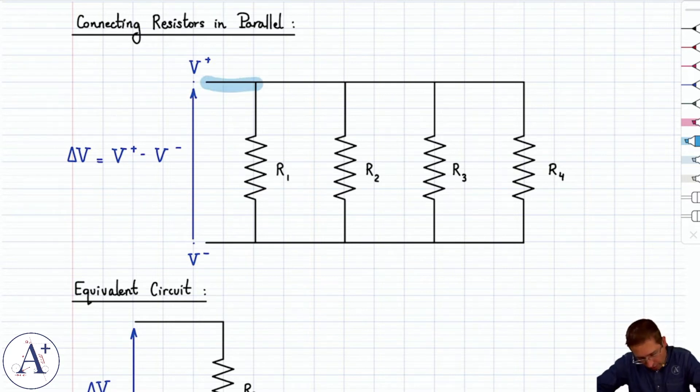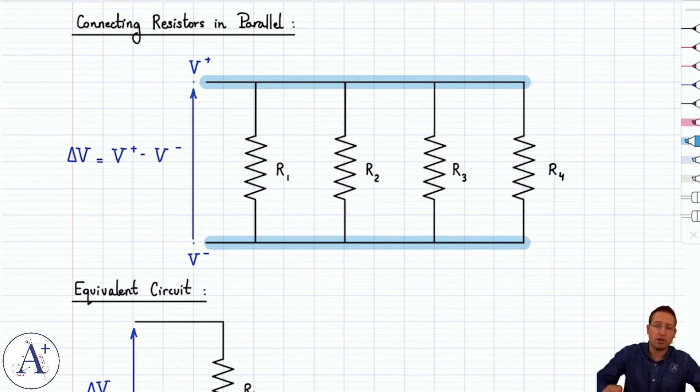To do that, we'll take the wire up top here that has electric potential V+, and connect all the top terminals of the resistors to that wire, and then the wire here that has electric potential V-, and we'll connect all the bottom terminals of the resistors to that wire.